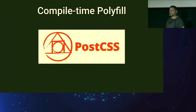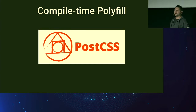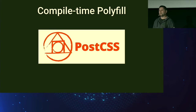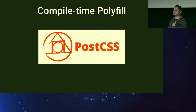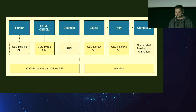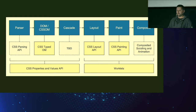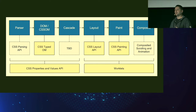Another solution is to polyfill features with compile-time polyfilling. We have a beautiful tool for that called PostCSS — it's actually the Babel for CSS. It allows you to use modern features from the newest CSS specifications right now and compile them down to older CSS versions. Houdini provides a bunch of APIs to solve different problems with CSS and extend our capabilities.